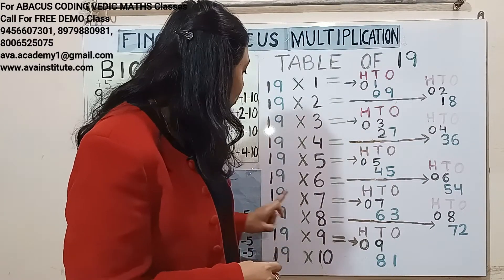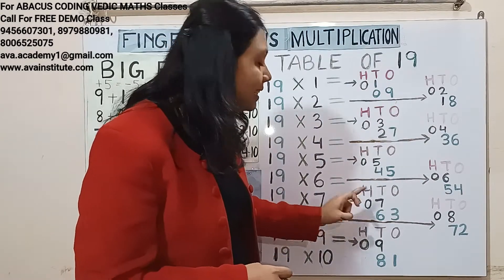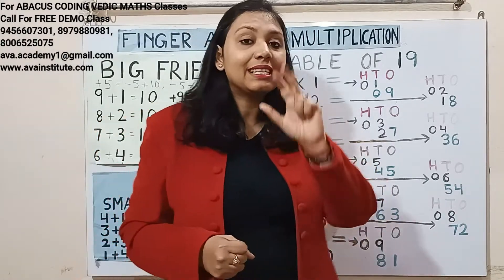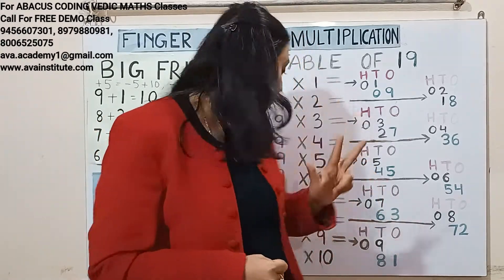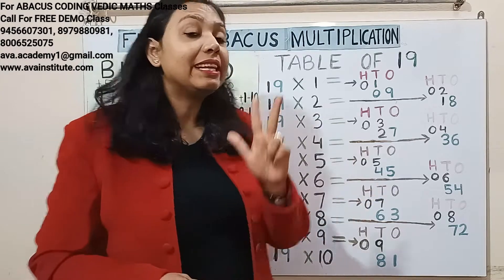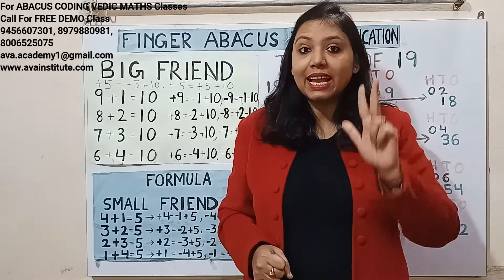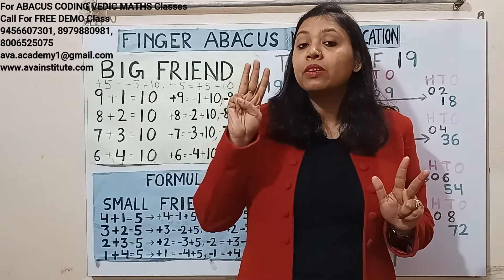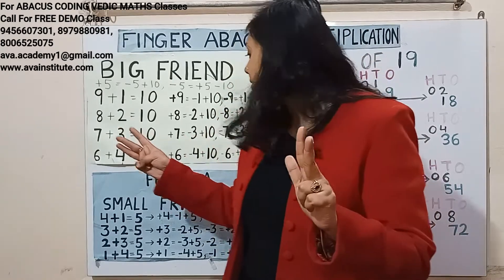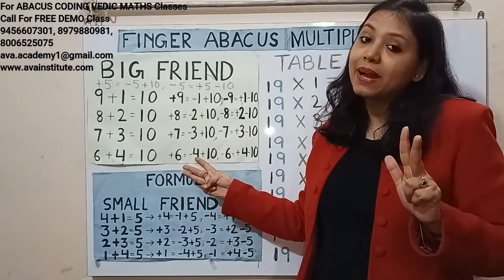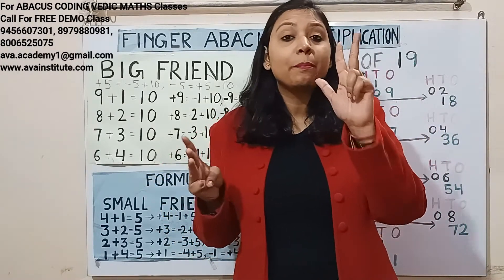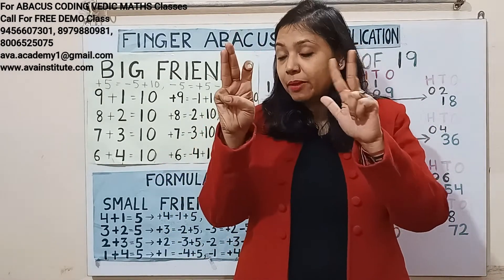Next, 19 sevens are: 1 seven is 7 — in hundreds we represent 0, in tens we represent 7. 9 sevens are 63 — in tens we represent 60 and in ones we represent 3. 3 we can add. How to add 60? Plus 6 formula is minus 4 plus 10, so plus 60 formula is minus 40 plus 100.